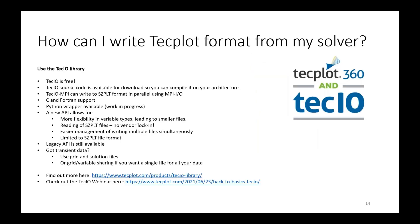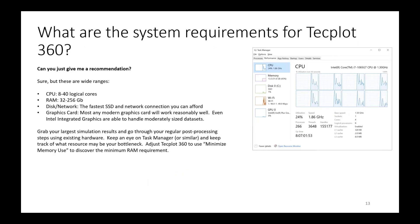A question came in: is performance based on system specs the same on other platforms like Linux? One thing we've found is that Linux typically has a faster file system than Windows, so we see that load times off disk on Linux machines are faster than Windows. For everything else — CPU, RAM, network speed — it's all going to be about the same.